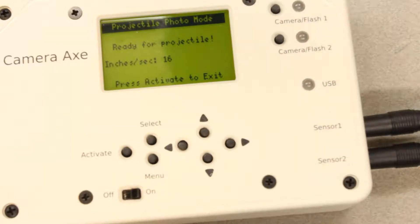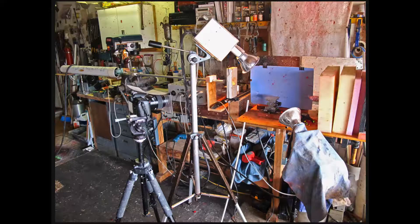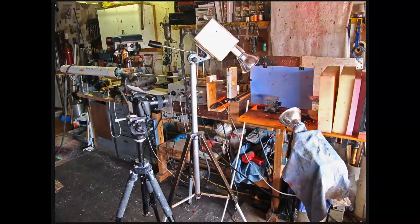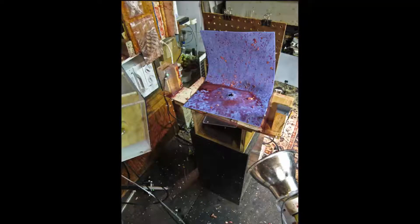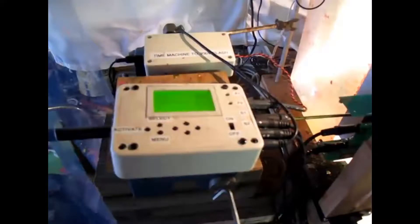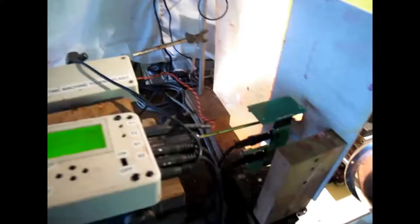These are some photos of Alan's setup for high-speed photography. I will put some links to these photos in the show notes, and you can go check them out and see his description of why he set it up this way. I'll also put a link to Alan's Flickr account where you can go and see more of his high-speed photography shots.